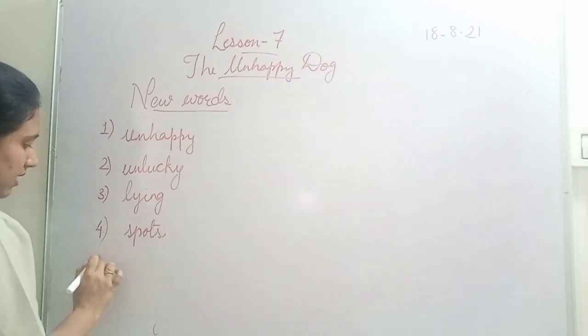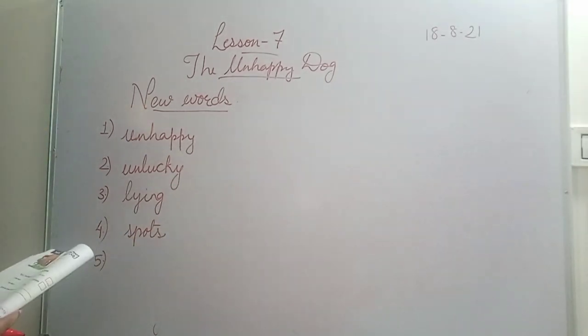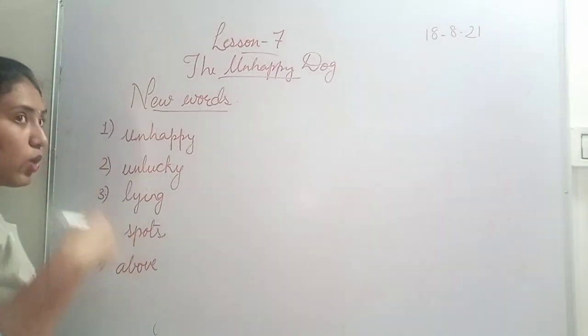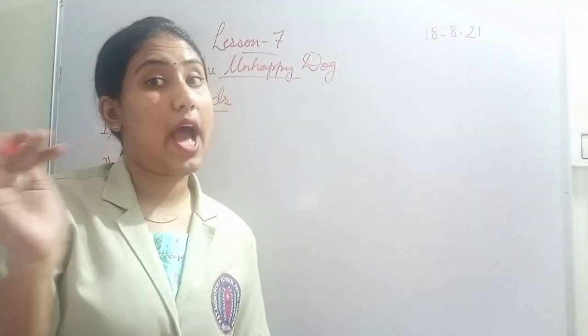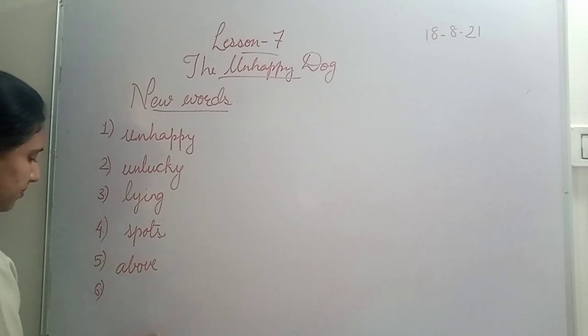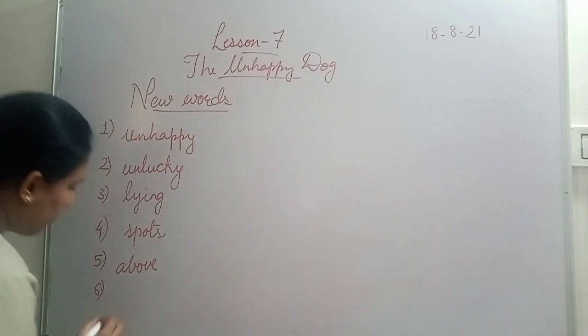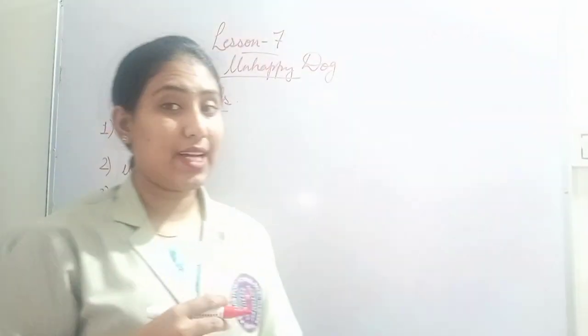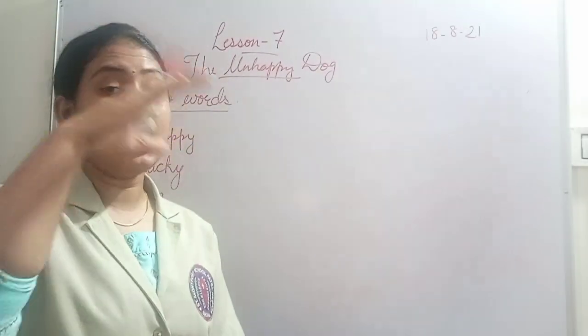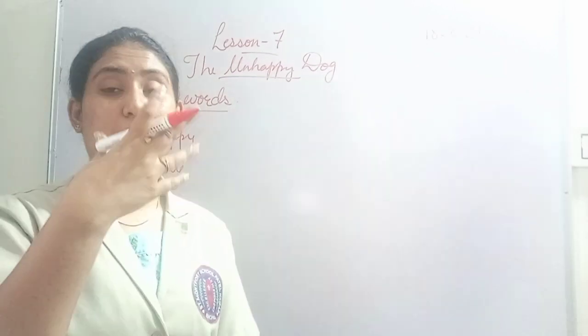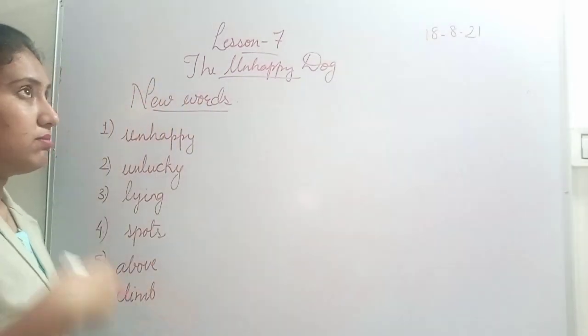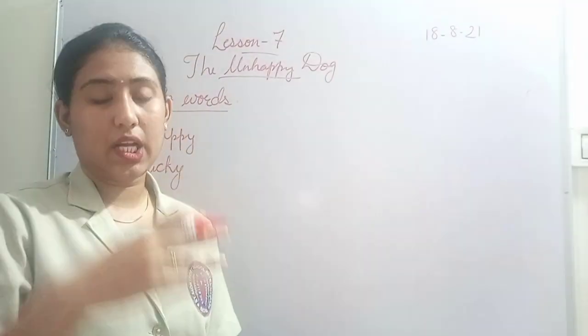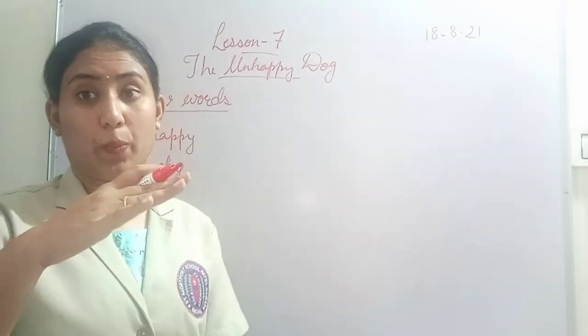Fifth word is 'above.' Above means on top of something. The cat was walking above the high walls. Sixth one is 'climb.' Climb means to go up on something. Monkeys climb on the tree. Similarly the cat was climbing on the wall. Above means higher than the ground.